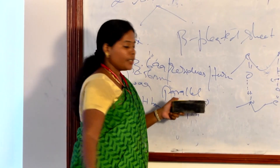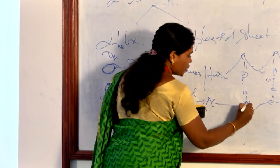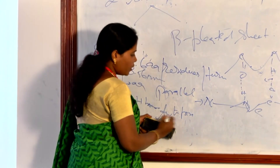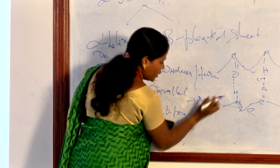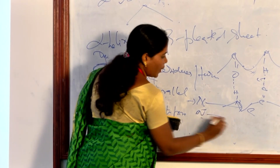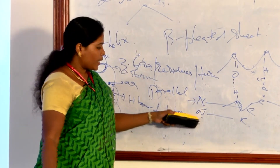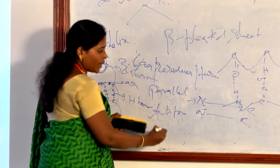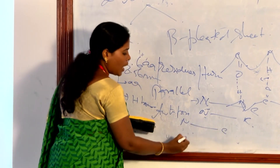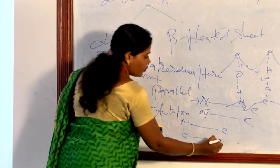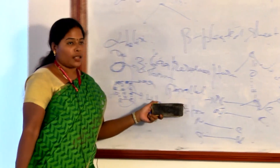In the parallel arrangement, the N-terminal binds with the C-terminal, and again C-terminal binds with N-terminal in the same direction. In the anti-parallel arrangement, the N-terminal binds with the C-terminal and the C-terminal binds with the N-terminal in opposite directions.